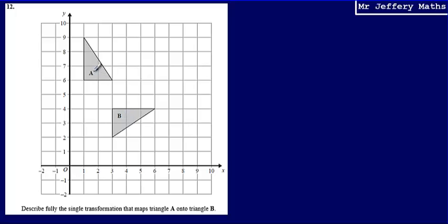Immediately I can see it's not a translation. A translation, the shape would stay in the same orientation, it would have just been moved somewhere. I can see it's not an enlargement because the shape hasn't got any bigger or smaller. I can also see that it is not a reflection because the shape hasn't been flipped over, which means that to get from A onto B, it must be a rotation.